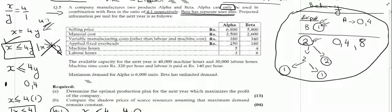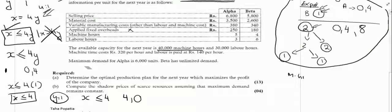It further says that projected information per unit for the next year is as follows. You are provided with certain information. You are provided with selling price, material cost, variable manufacturing costs, applied fix overheads. Remember, applied fix overheads are not used to calculate contribution, machine hours, labor hours. And then it says that the available capacity for the next year is 40,000 machine hours. The limit on machine hours is given. So we can form a machine hours equation and it will be since alpha is represented by 5, like any other question, it will be 5x plus 4y is less than or is equal to 40,000.